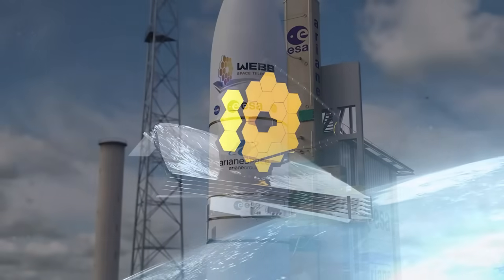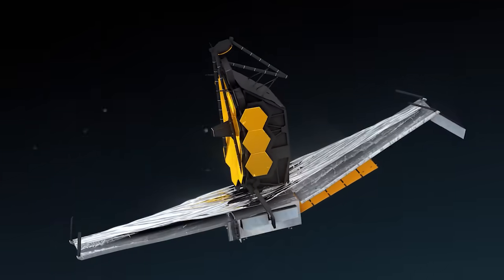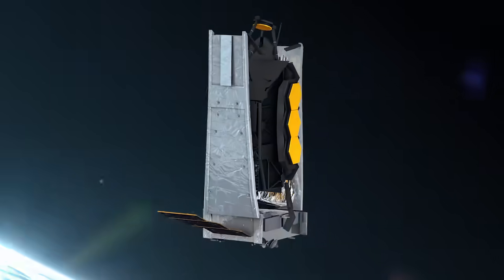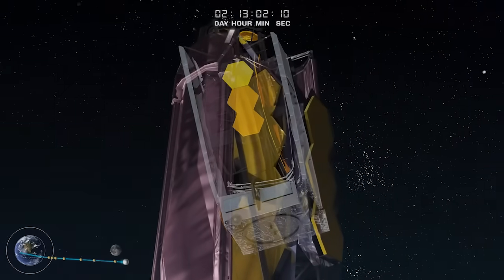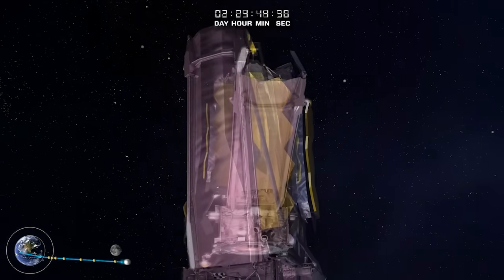The main mirror was divided into three large portions, and the sunshield was folded. What was stressful for the scientists was that James Webb had to unfold itself, without any possibility of intervention.